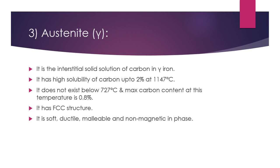The third phase is the austenite phase, that is the gamma phase. It is the interstitial solid solution of carbon in gamma iron. It has high solubility of carbon — up to 2% at 1147°C. It does not exist below 727°C, and the maximum carbon content at that temperature is 0.8%. However, austenite can exist below 727°C in very small quantities, and this is called retained austenite. It has an FCC (face-centered cubic) structure and is soft, ductile, malleable, and non-magnetic.